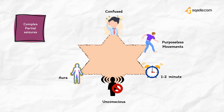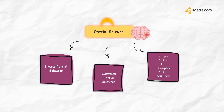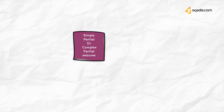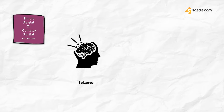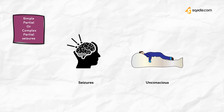The seizure focus is located in the temporal lobe. In simple partial or complex partial seizures, secondary generalization occurs first and evolves into generalized tonic-clonic seizures with loss of consciousness.